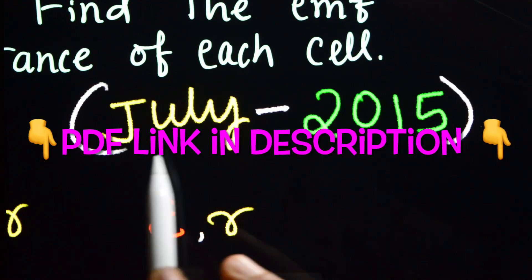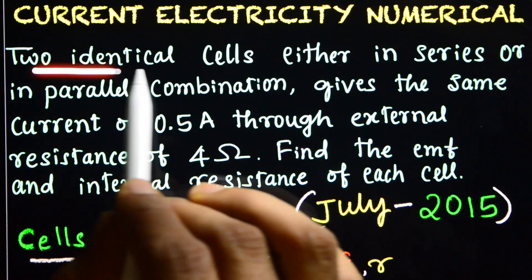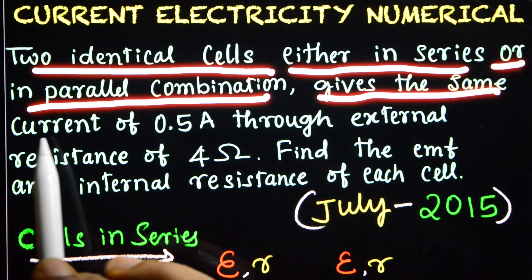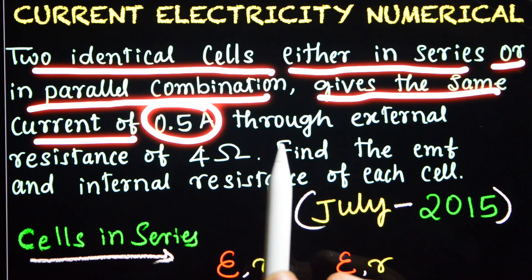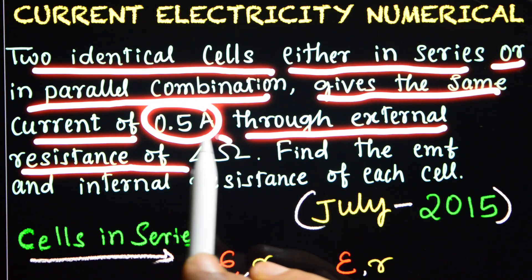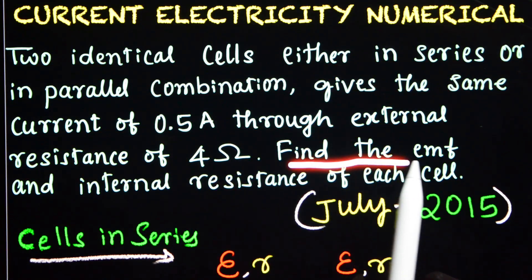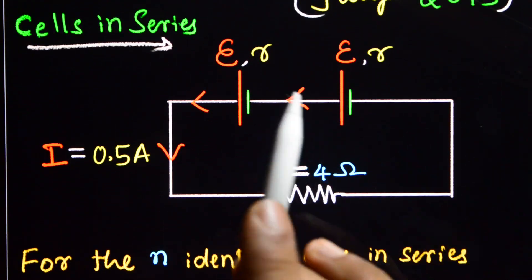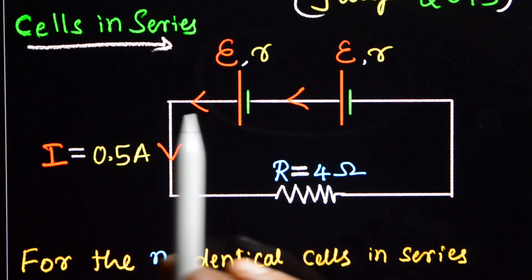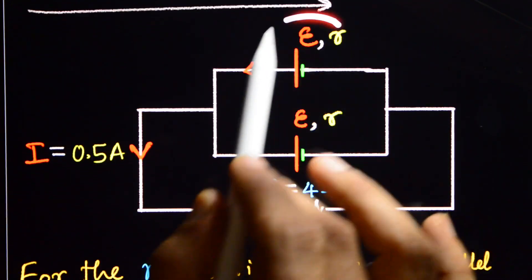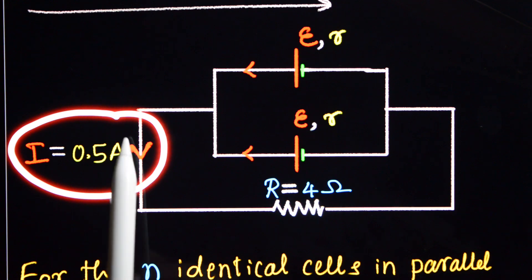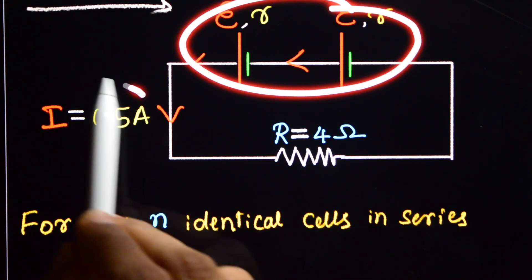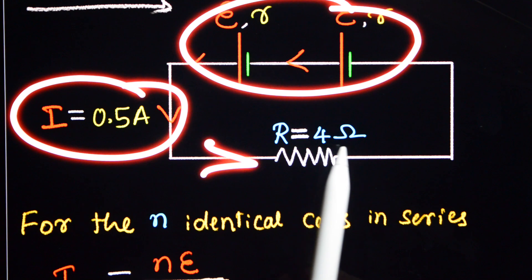Current Electricity Numerical, July 2015. Two identical cells, either in series or in parallel combination, give the same current of 0.5 Ampere through an external resistance of 4 Ohm. Whether you connect them in series or in parallel, they give the same current of 0.5 Ampere through the external resistance. Find the EMF and internal resistance of each cell.